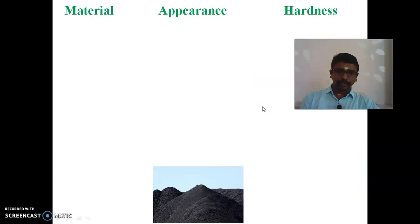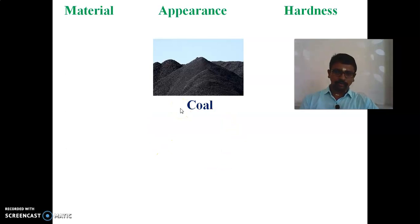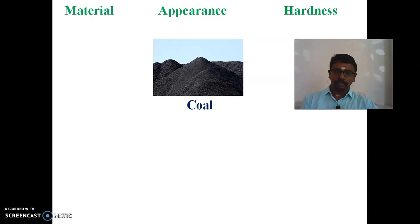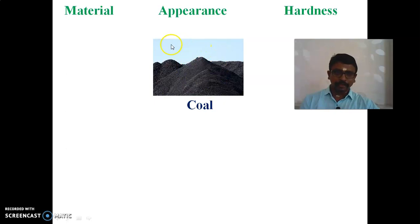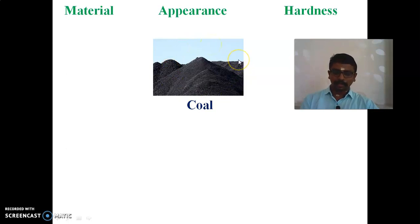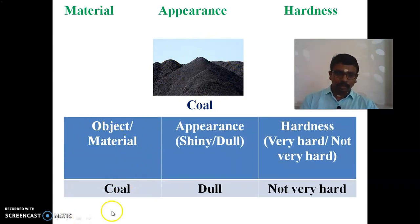The next material is coal. Coal is made with the presence of carbon. You can see the appearance — it is dull. And hardness — it is not very hard. So we can conclude: coal's appearance is dull and its hardness is not very hard.